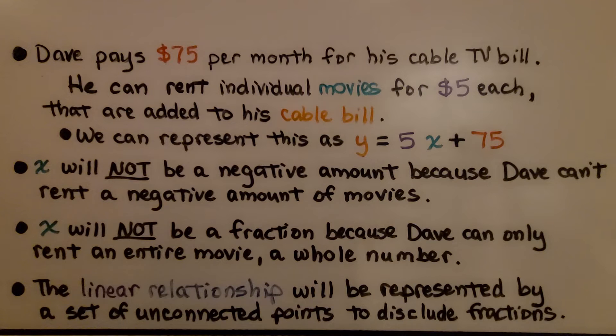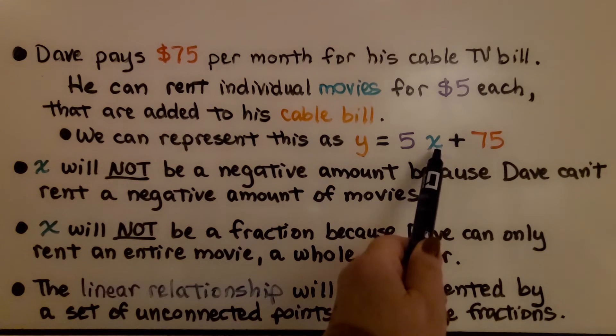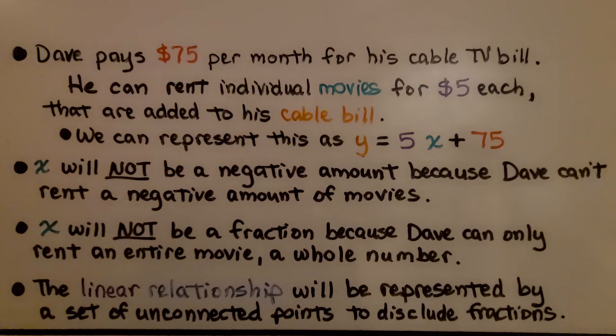x will not be a negative amount because Dave can't rent a negative amount of movies. x will not be a fraction because Dave can only rent an entire movie, a whole number. The linear relationship will be represented by a set of unconnected points to exclude fractions.